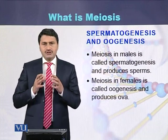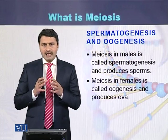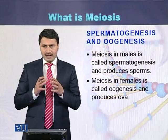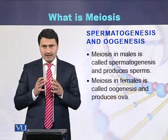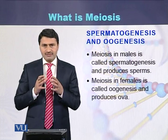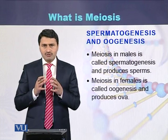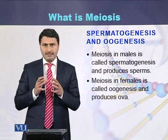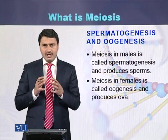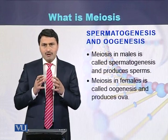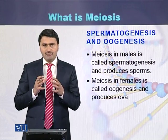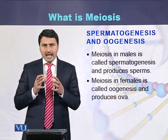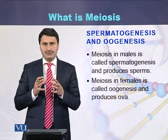Meiosis in males is called spermatogenesis, while meiosis in females is called oogenesis. As a result of spermatogenesis, sperms are produced, while as a result of oogenesis, ova or eggs are produced.